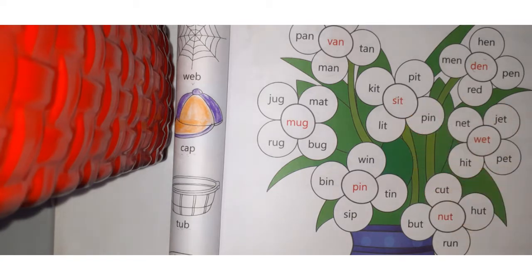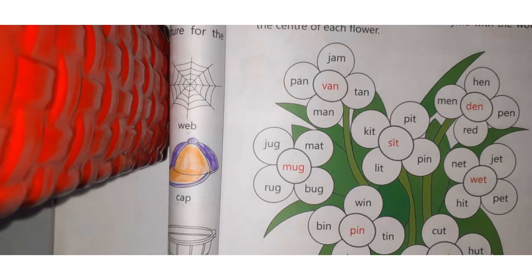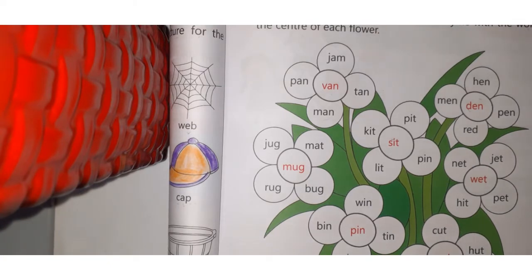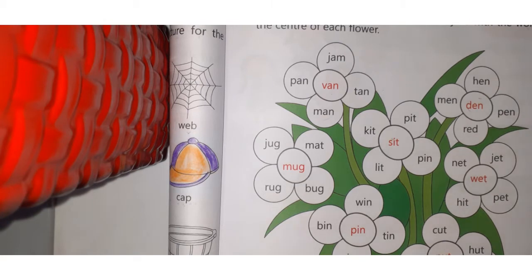For example: cat, bat, mat, rat. They are all the same. They sound the same. You have to color them. Now check out your favorite color, any color.